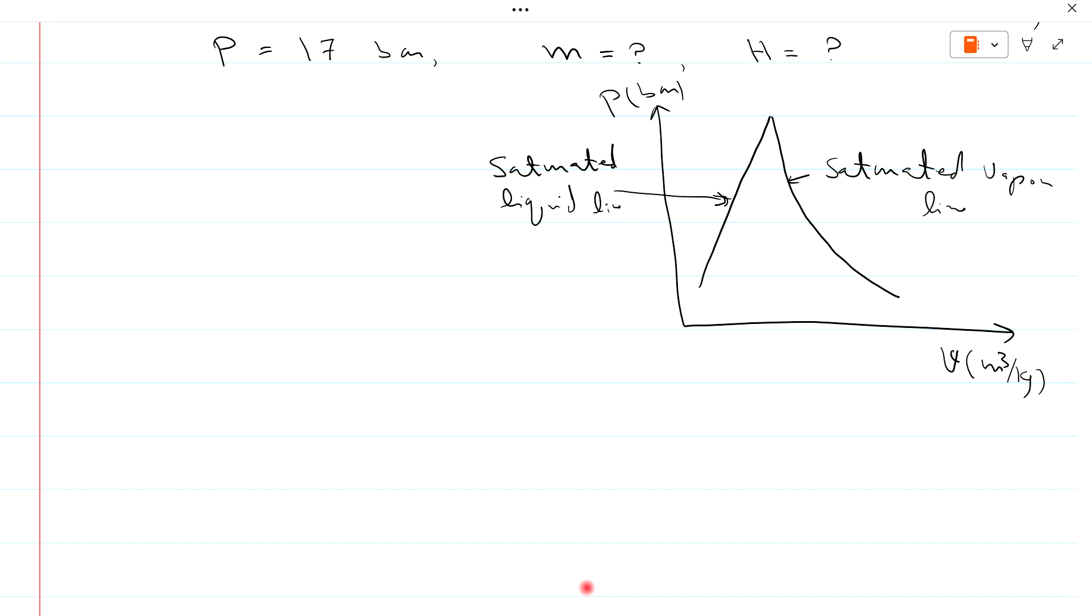When we start heating water at this point, the saturated liquid line, the water boils. And after this, the liquid is started to convert into vapor.